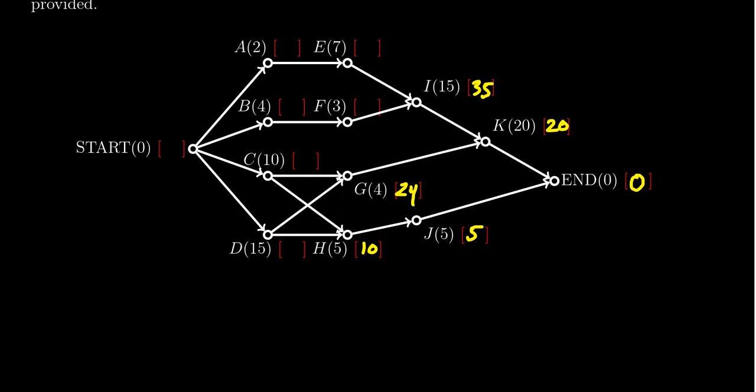Looking at E here whose processing time is 7, 7 plus 35 gives us 42. F here only precedes I and so we're going to take 3 plus 35 to get 38. Moving down here, maybe we do D next. D precedes H and G. G is the more expensive one so we're going to take 24 plus 15 which gives a critical time of 39. Similarly, C precedes G and H but G is the more expensive one at 24, so we're going to take 10 plus 24 to give us 34.